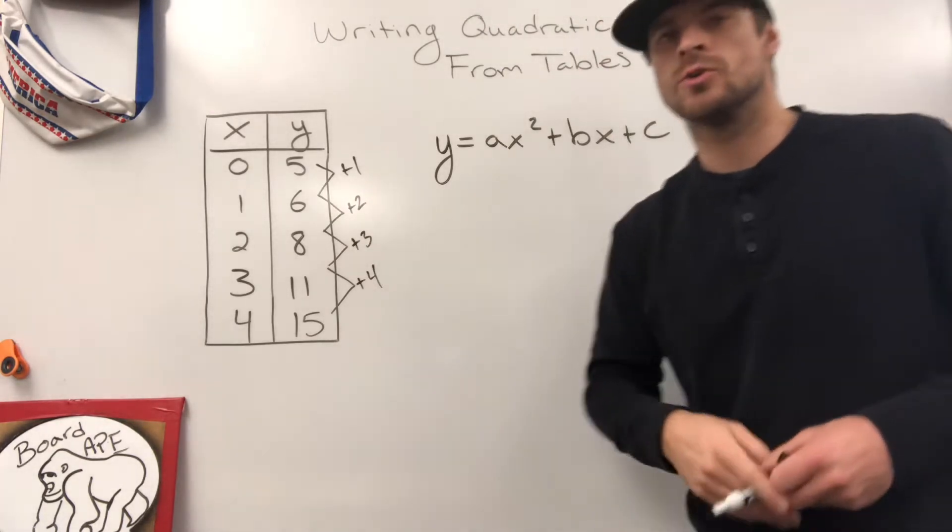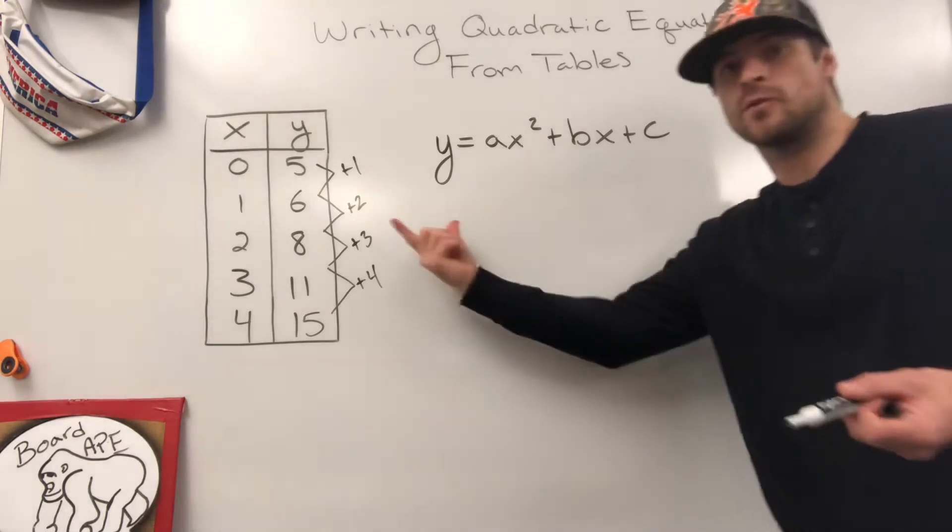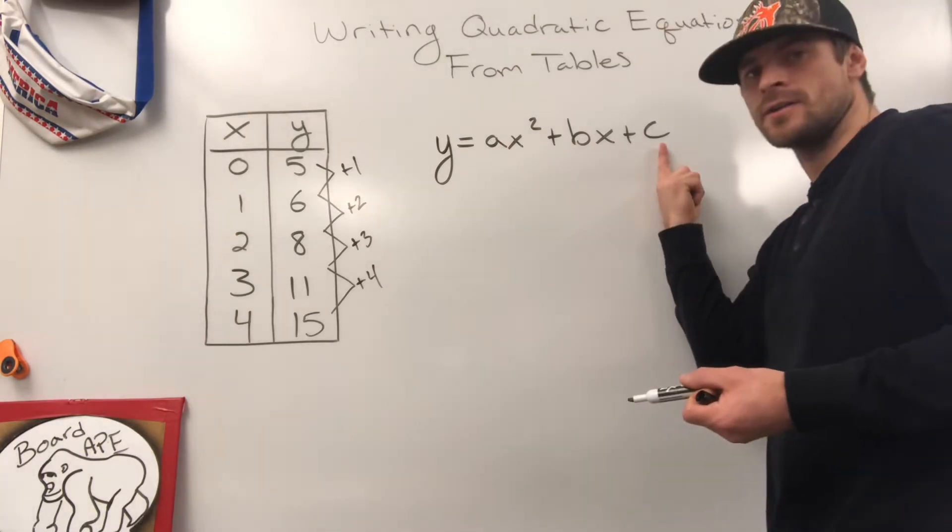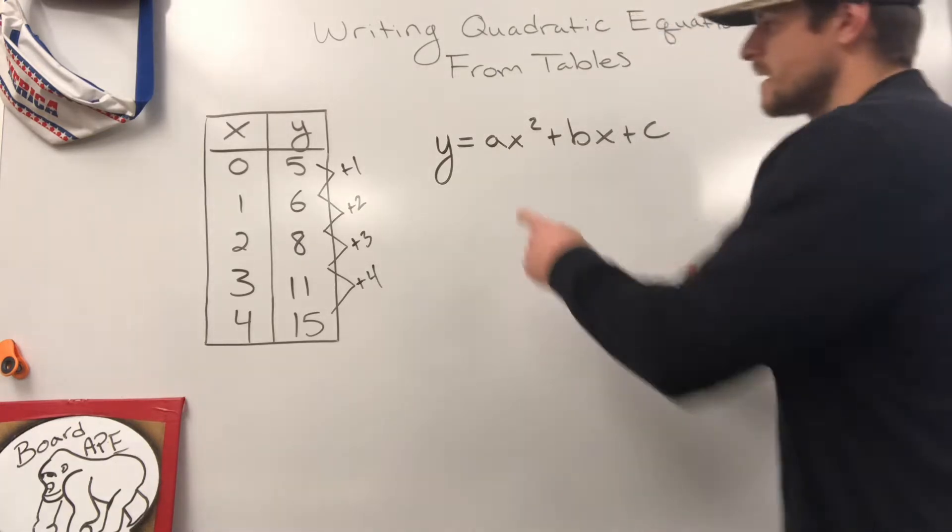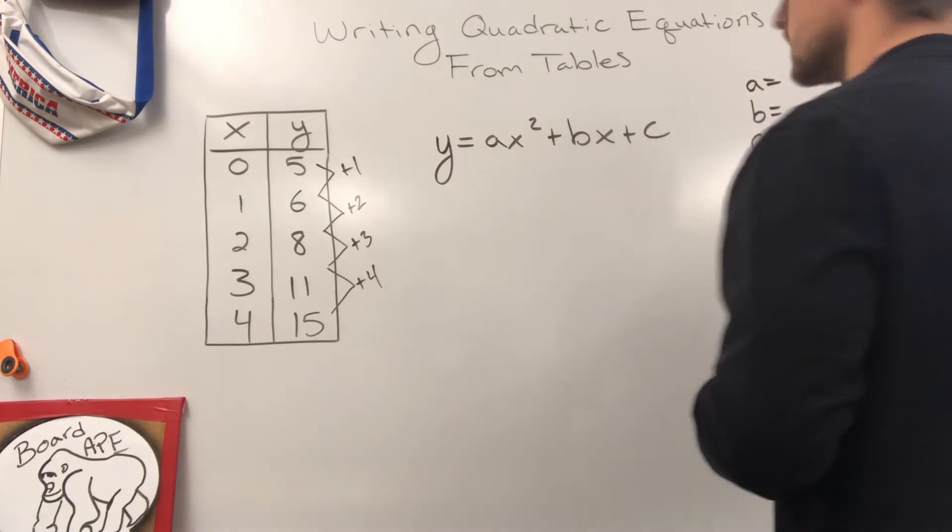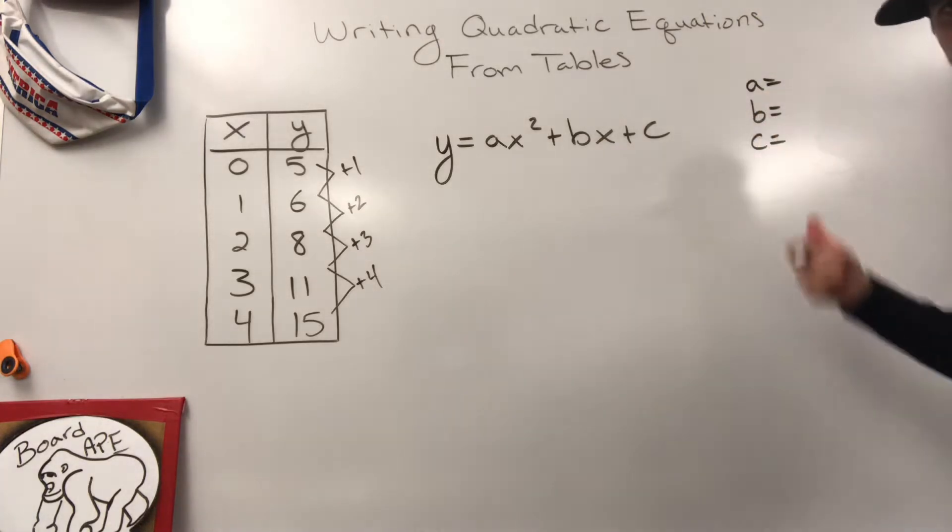What you need to do in order to find out the equation for a quadratic is you need to determine what the a, the b, and the c values are. I'm going to tell you how to find each one of those. So we're going to need to find a, we're going to need to find b, and we're going to need to find c. I'll write those off to the side, and we'll track them as we find them.